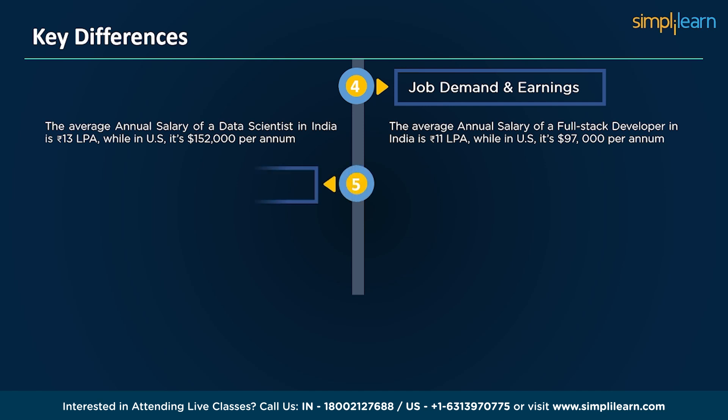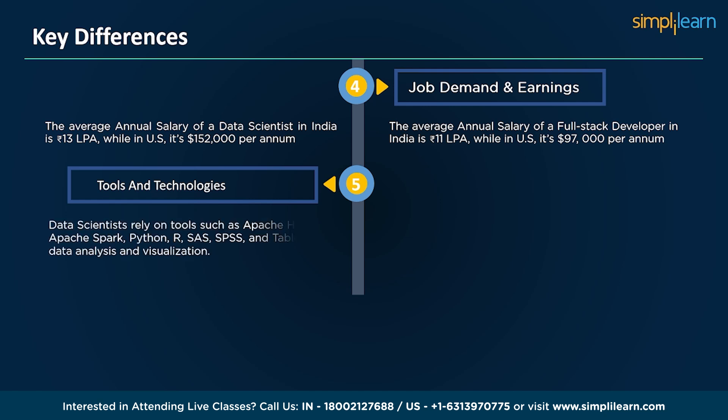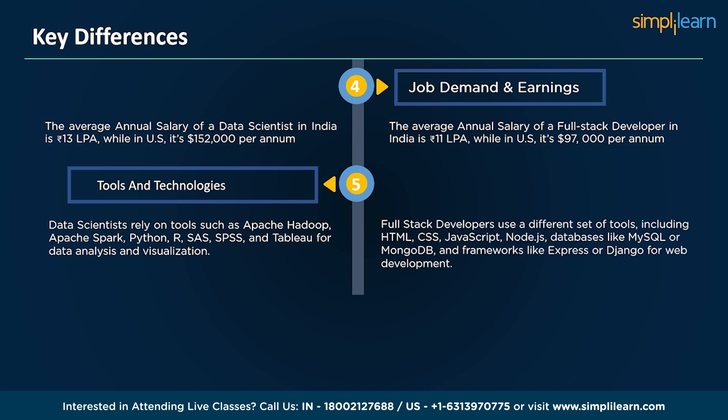The last comparison point is tools and technologies. Data scientists rely on tools such as Apache Hadoop, Apache Spark, Python, R, SAS, SPSS, and Tableau for data analysis and visualization. Full stack developers use a different set of tools including HTML, CSS, JavaScript, Node.js, databases like MySQL or MongoDB, and frameworks like Express or Django for web development.